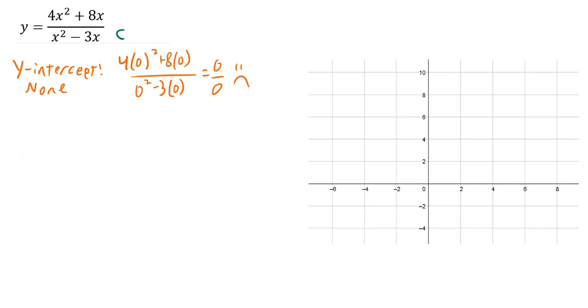For the horizontal asymptote, this is an Eats DC situation. The exponents are the same, so I divide coefficients. My horizontal asymptote is 4 over 1, which is y equals 4.